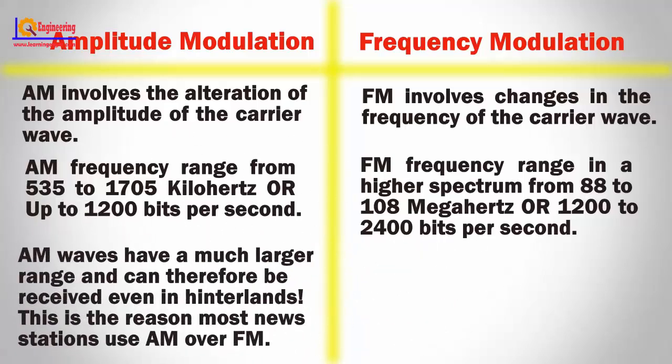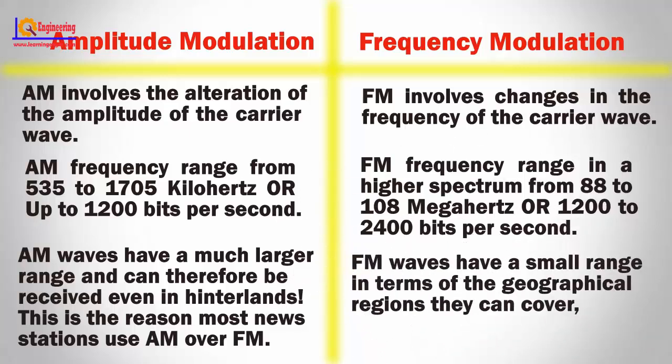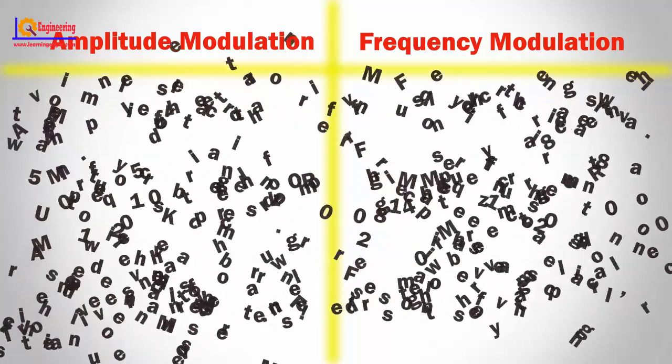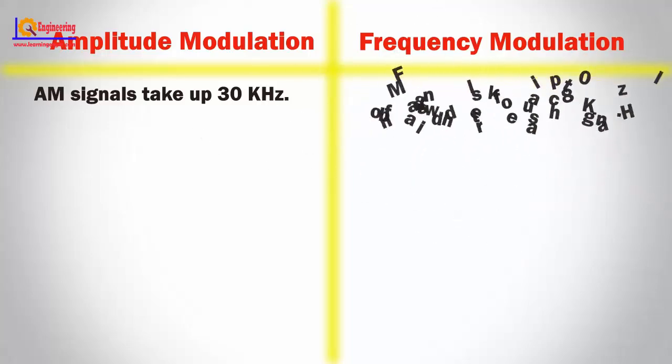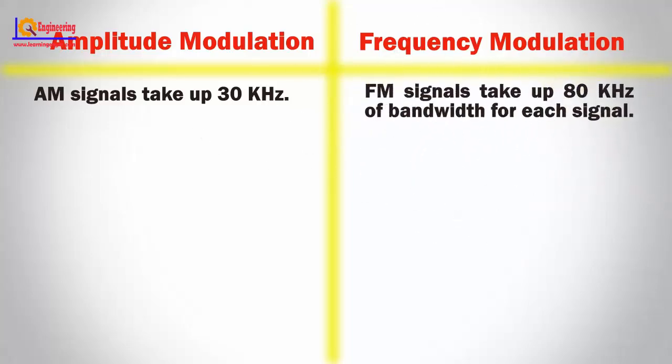AM waves have a much larger range in terms of the geographical region they can cover. AM signals take up 30 kHz, while FM signals take up 80 kHz of bandwidth for each signal.